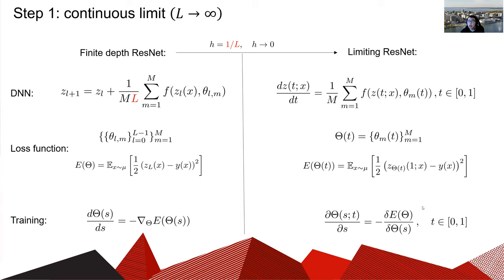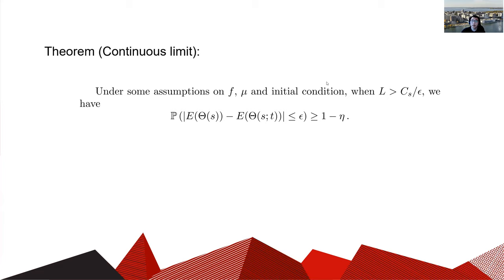Here delta E over delta theta is a functional derivative. In this limit, for each fixed t we have an ODE, and theta(s,t) changes in s according to this ODE. The right-hand side of this ODE depends on the whole profile of theta(s,t), making this a coupled ODE. We can also make this limit rigorous: when l is large enough, the loss function is close with high probability. We note that this bound on l is sharp in terms of the discretization error.